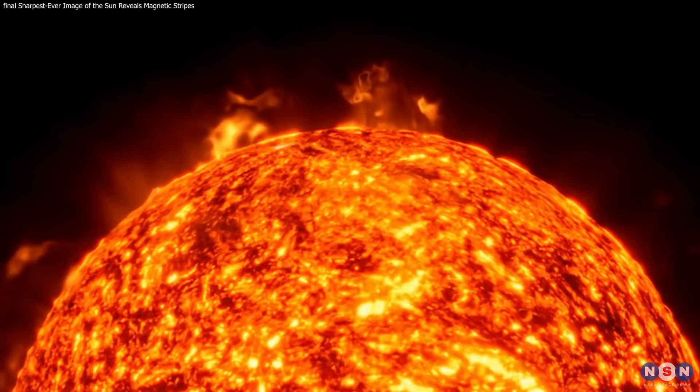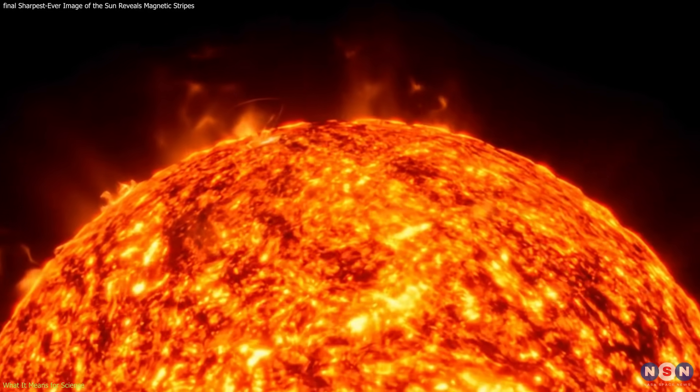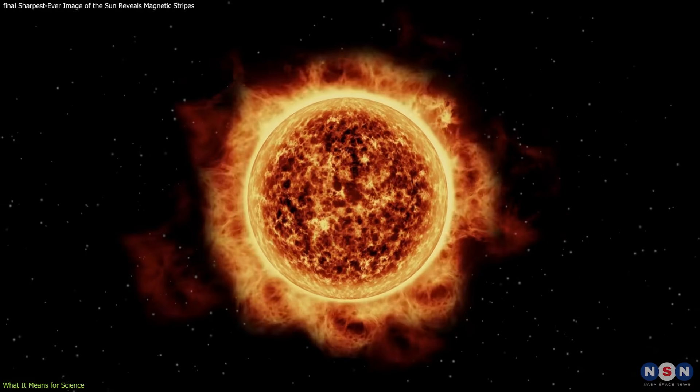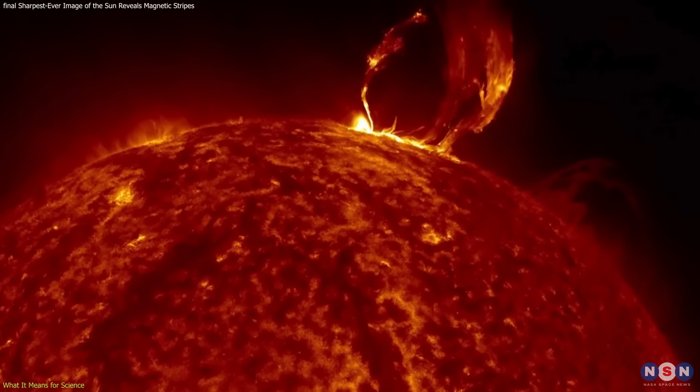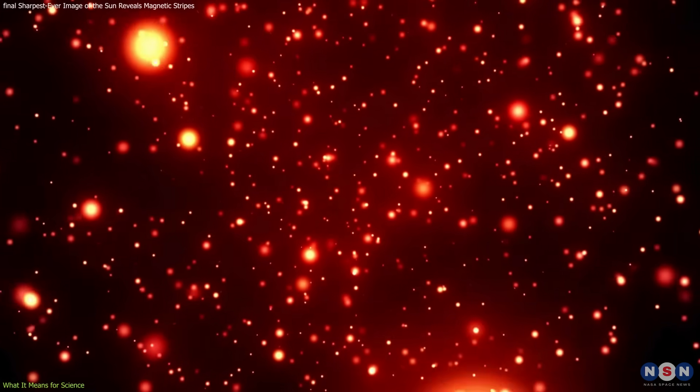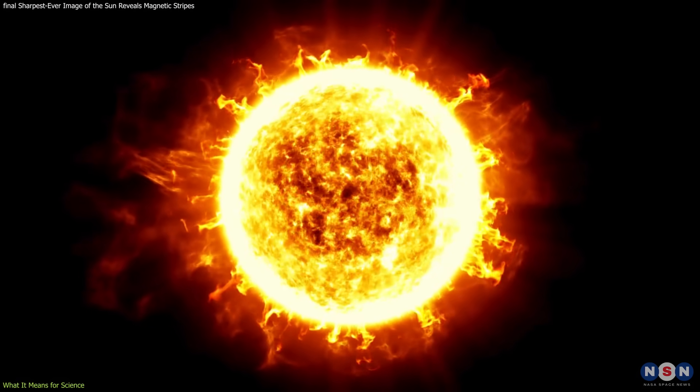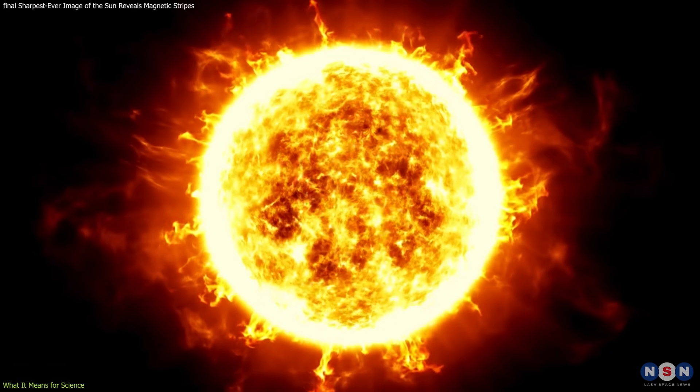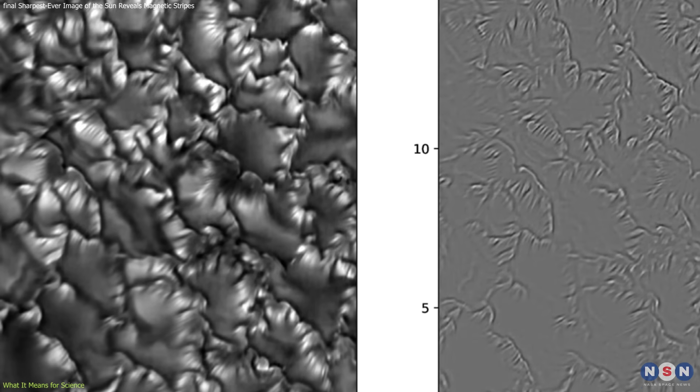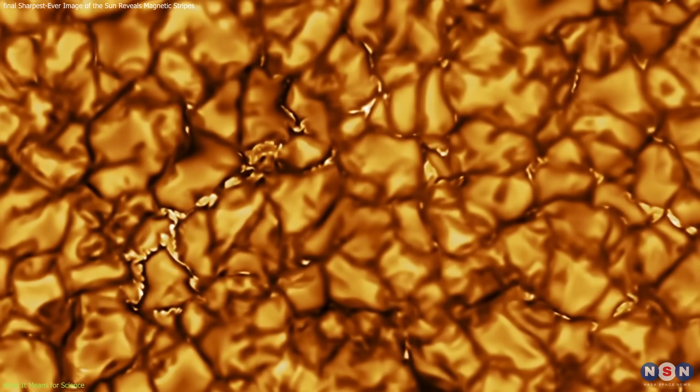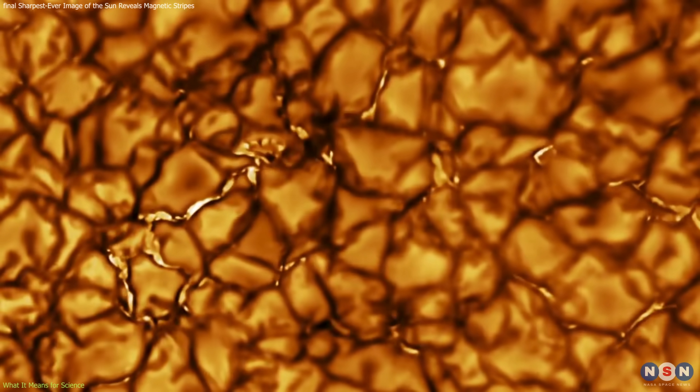The detection of photospheric striations has significant implications, not only for how we view the Sun, but for how we model it, forecast its behavior, and even interpret other stars. For decades, solar magnetic research focused primarily on large-scale features—sunspots, solar flares, and coronal loops. But these new striations show that magnetism plays a role at much smaller, quieter scales.